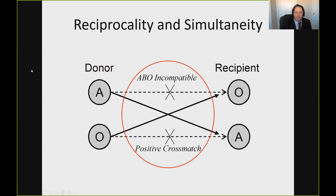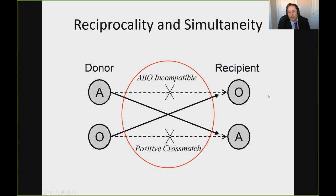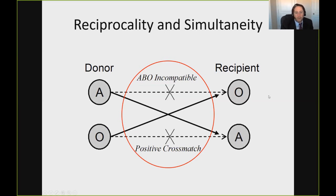Some have even proposed never-ending chains, continuing them more and more. Though realistically, we don't like to ask donors to wait very long before donating, and so these chains eventually all end at the waiting list. So there are two main ways of getting people with an incompatible donor transplanted: desensitization — taking on the antibodies — and kidney exchange — cleverly avoiding them.